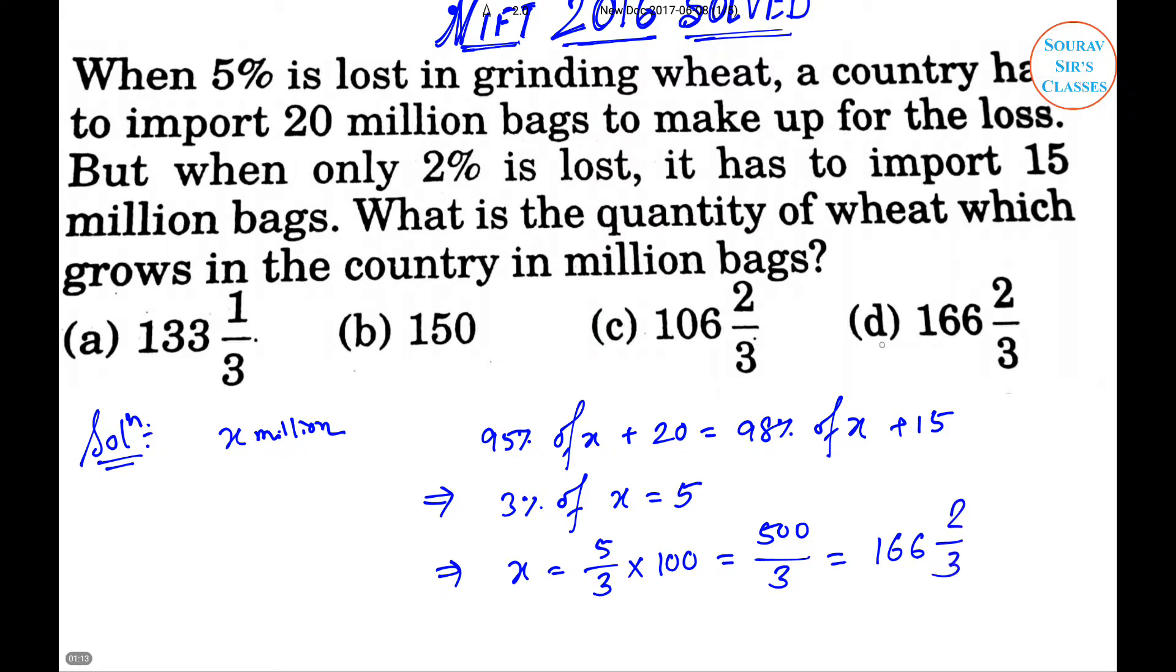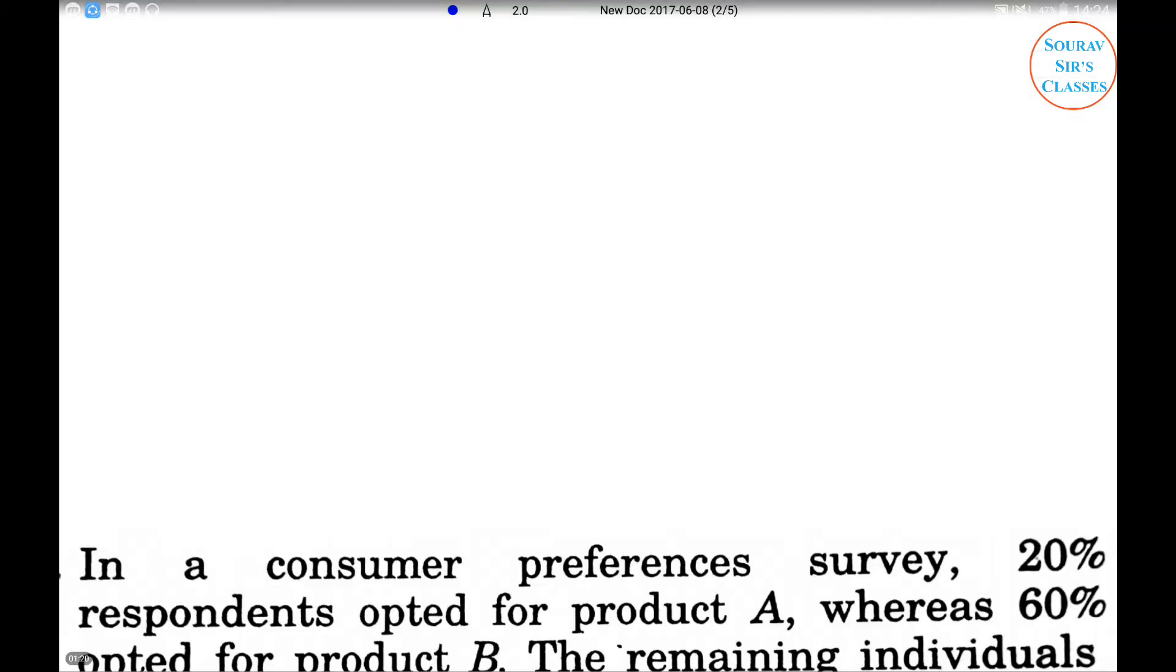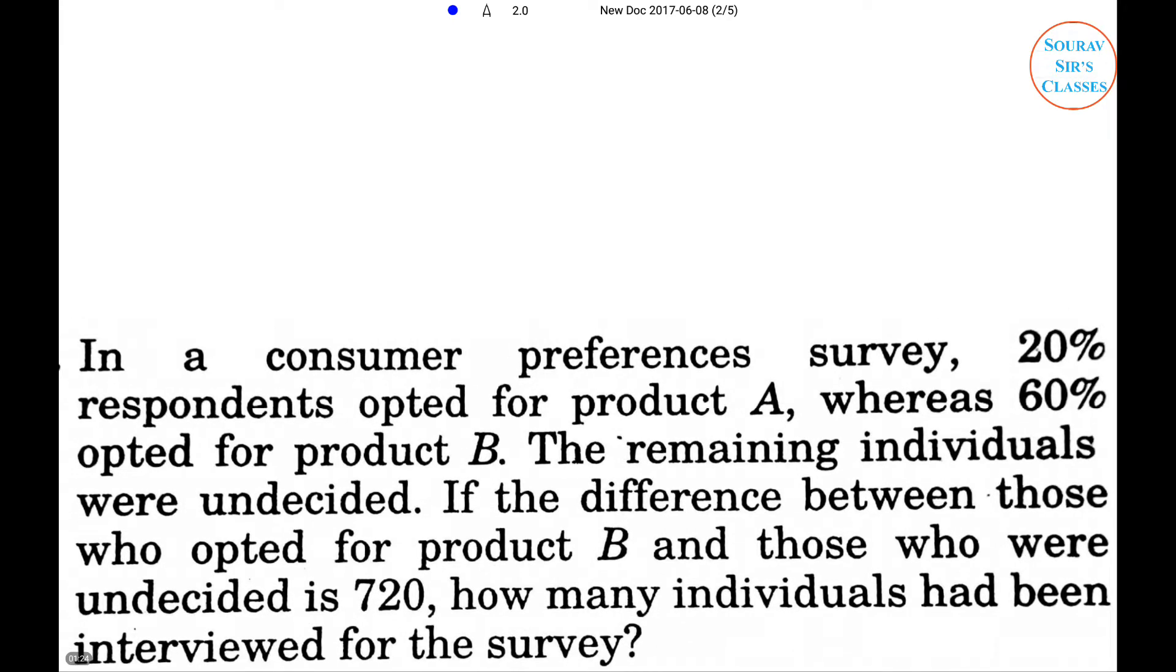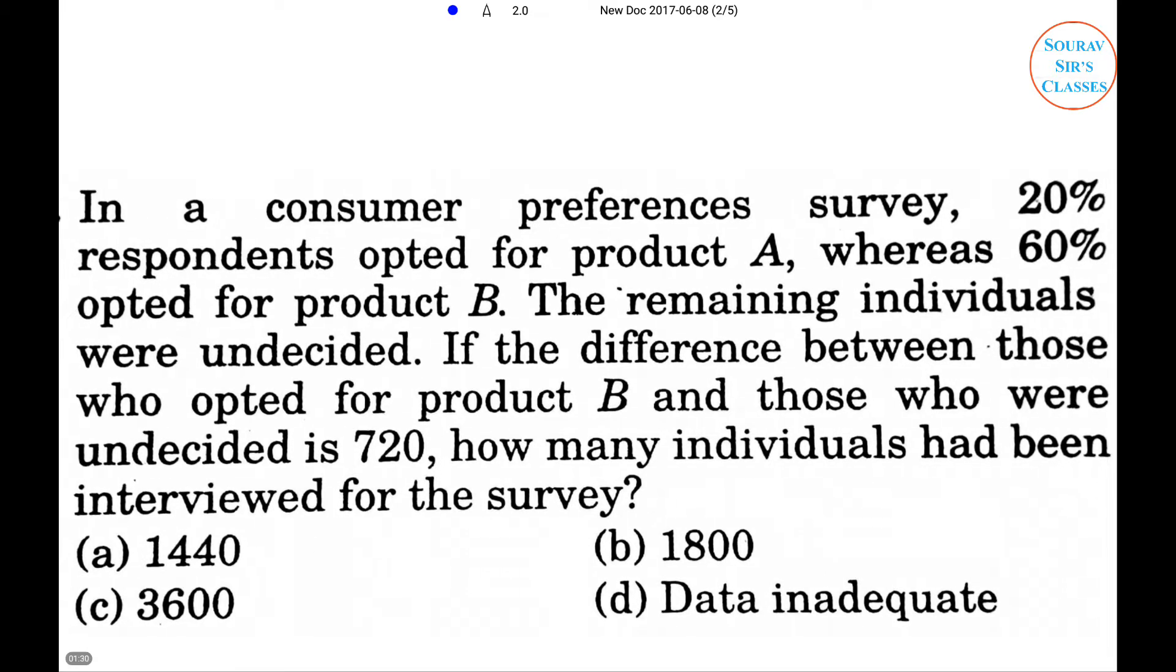Next problem: In a consumer preferences survey, 20% respondents opted for product A whereas 60% opted for product B. The remaining individuals were undecided. If the difference between those who opted for product B and those who were undecided is 720, how many individuals had been interviewed for the survey?